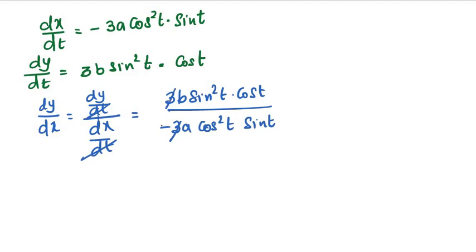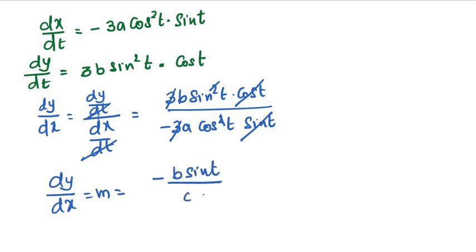The 3 cancels. One sin t cancels, one cos t cancels. So dy by dx, which is slope m, is equal to minus b sin t divided by a cos t.